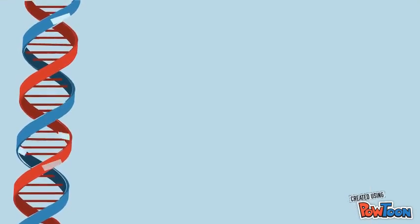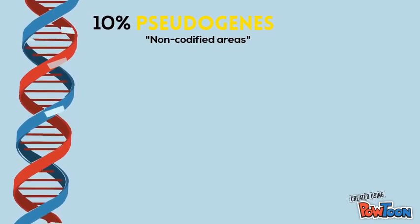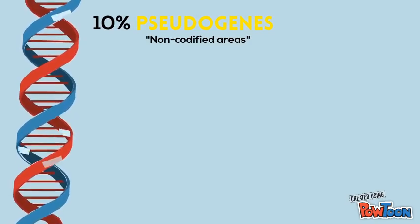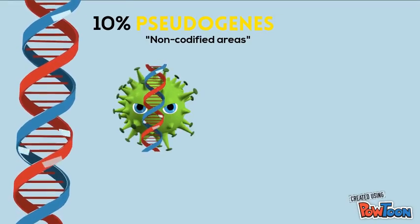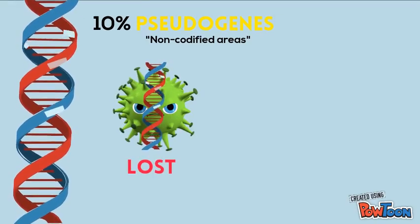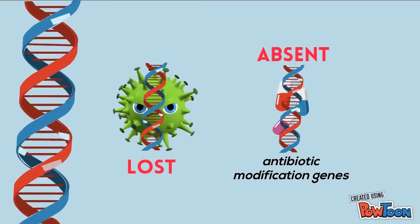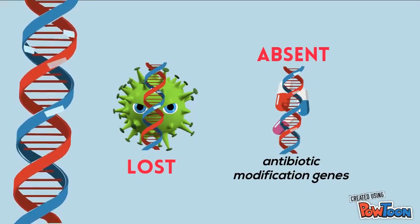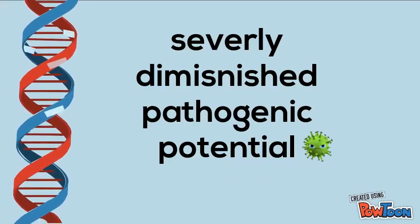However, S. thermophilis has 10% of pseudogenes due to mutation. This proportion is the highest among sequenced streptococcal genomes. It is believed that many pathogenic genes were lost. Also, many streptococcal virulence-related genes are absent, such as antibiotic modification genes. This all means that there is a really diminished pathogenic potential.